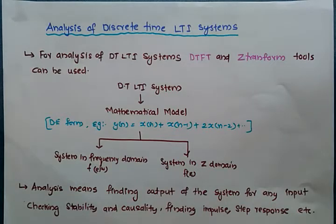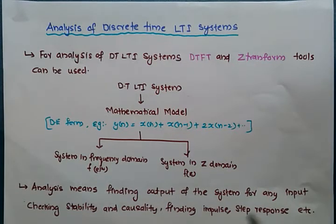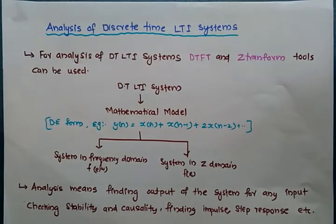Hello friends. The first topic in the sixth module is analysis of discrete time linear time invariant systems. Analysis of discrete time LTI systems becomes easier when we make use of transformation tools. This approach is very much similar to what we did for continuous time systems. For analysis of discrete time LTI systems, DTFT — that is discrete time Fourier transform — and Z-transform tools can be used.